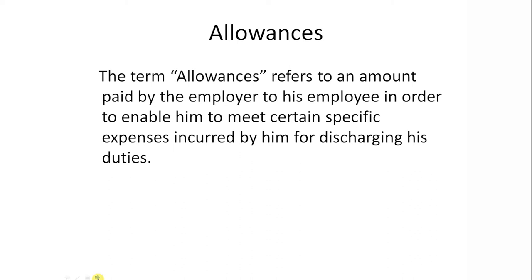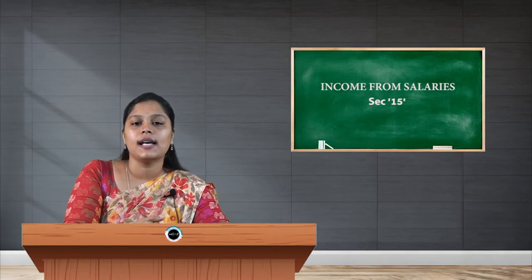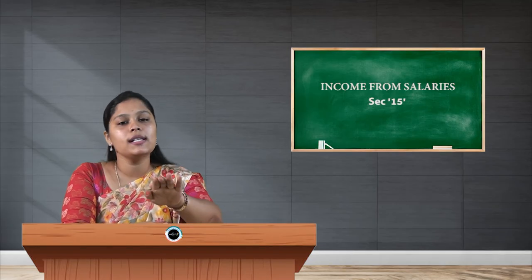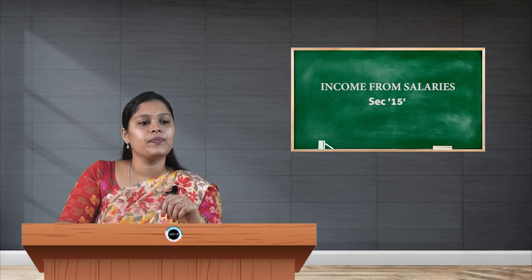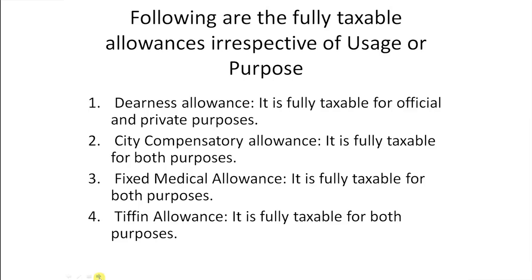Next, let us know the meaning of allowances. The term allowances refers to an amount paid by the employer to the employee in order to enable them to meet certain specific expenses incurred for discharging duties. Now, the types of allowances: the following are fully taxable allowances irrespective of usage or purpose — whether used for official purpose or private purpose, all these allowances are fully taxable.